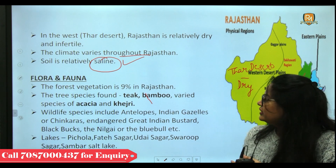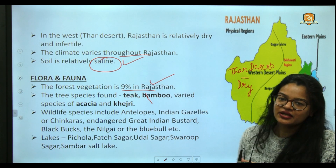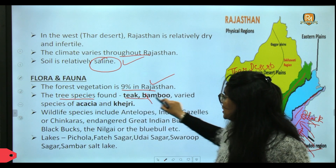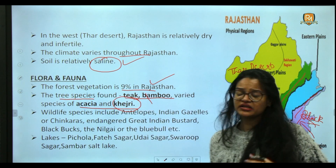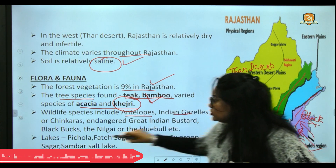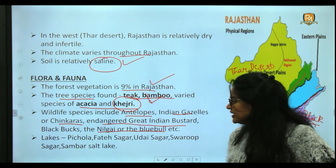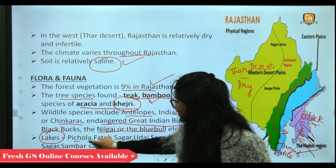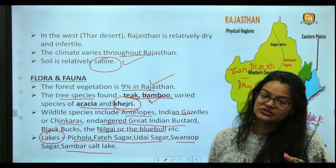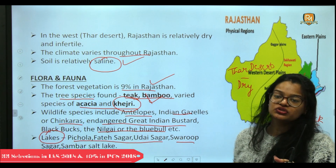Forest vegetation covers only 9% of Rajasthan, largely because 70% of the state is comparatively dry. Tree species include Teak, Bamboo, Acacia, and Khejri. Wildlife includes antelopes, Indian gazelles, chinkaras, the endangered Great Indian Bustard, black buck, nilgai, and blue bull. Major lakes in Rajasthan include Pichola, Fatehsagar, Udai Sagar, Swaroop Sagar, and Sambhar Salt Lake. Udaipur is known as the city of lakes, with Pichola Lake, Udai Sagar, and Fatehsagar all located in the Udaipur region.